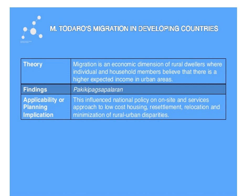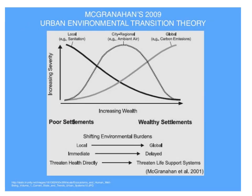The next theory is Todaro's migration in developing countries. Migration is an economic dimension of rural development, where individual and household members believe that there is a higher expected income in urban areas. In this slide, we consider the urban environmental transition theory proposed by McGranahan. We consider a plot of increasing severity versus increasing wealth, showing poor settlements and wealthy settlements, and shifting environmental burdens from local to global, immediate to delayed, threatening health directly to threatening the life support system.